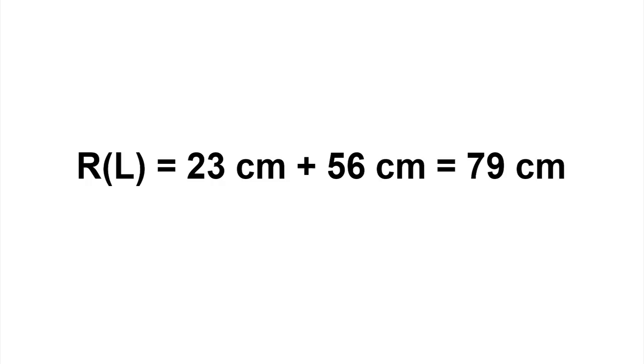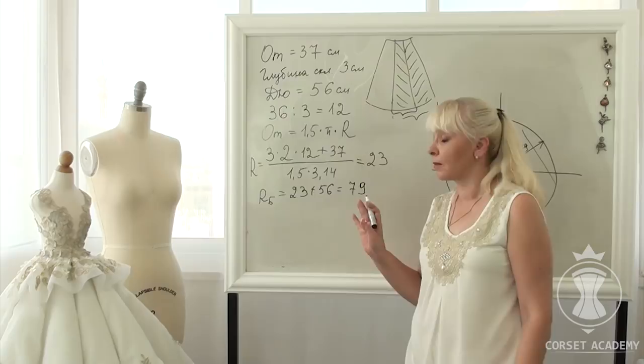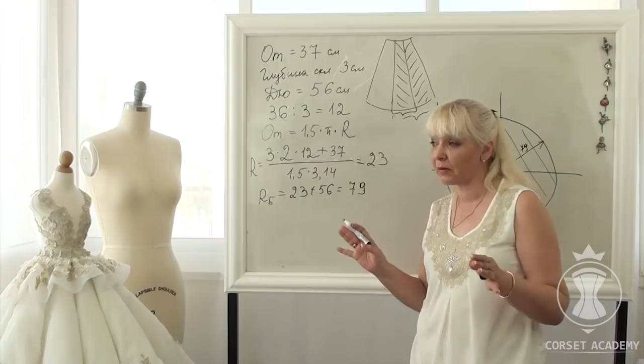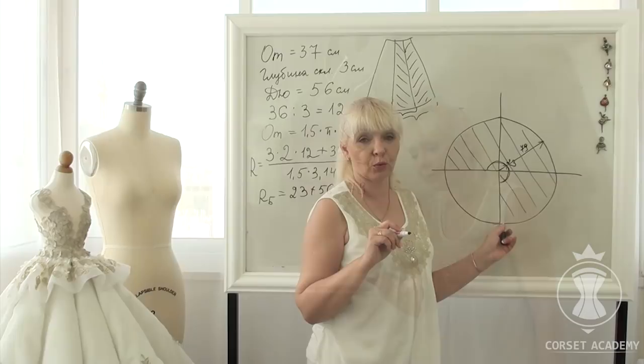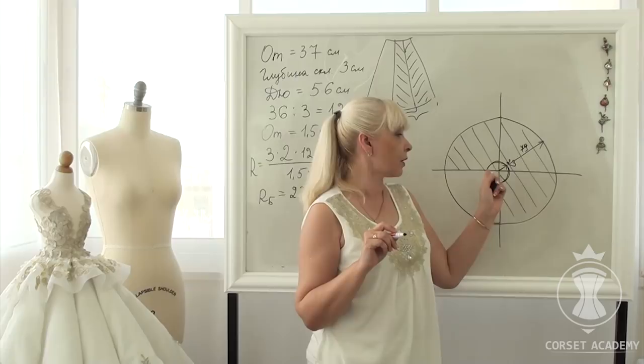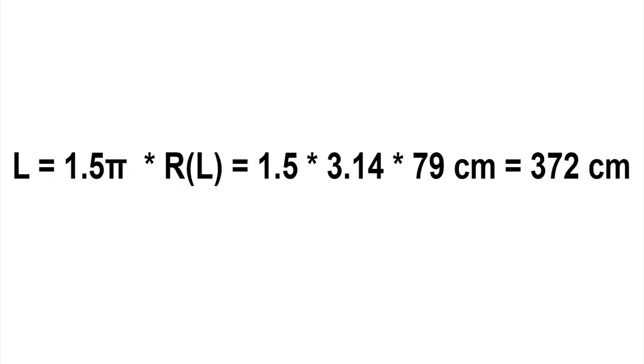Let us find R L, i.e. the radius for cutting the bottom edge of the skirt. R L equals 23 centimeters plus 56 centimeters equals 79 centimeters. Now we need to calculate the depth of the fold along the hem of the skirt and make sure that we are happy with it and that it does not go beyond reasonable bounds. The hem length of our 3/4 circle skirt with folds included L is as follows.